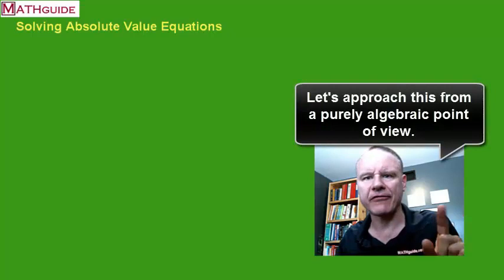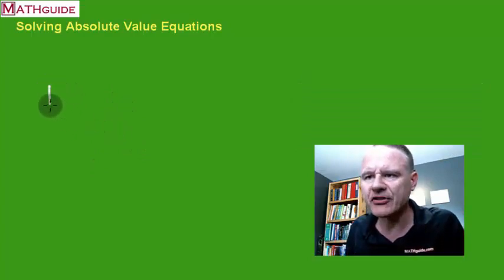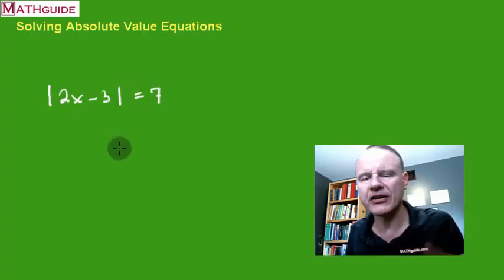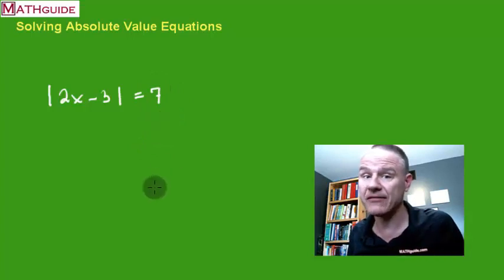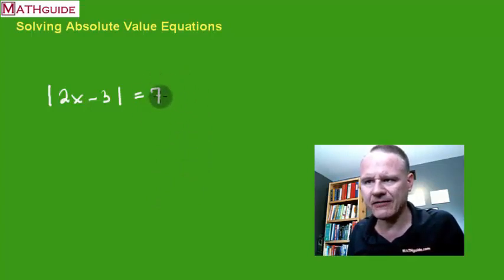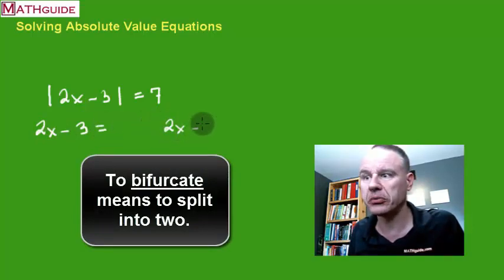Let's approach this from a purely algebraic point of view. Take a problem like the absolute value of two x minus three is equal to seven. From the graphical approach we learned there are always two solutions when the right side is positive. So how do you approach it? You bifurcate — that means you fork or split this into two separate equations to solve.